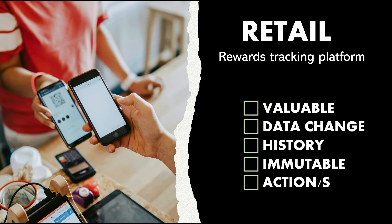Let's run this hypothetical app through our checklist. Are we measuring something valuable? Absolutely — the points. Is there a pattern where data keeps changing? Yes — every time the consumer earns points or cashes them out, that is the data change. Is it interesting to look at the history? Absolutely — when there is a dispute or a reason to do analytics, the history becomes very important. Is the data immutable? Yes — we want to keep it immutable because we do not want anybody to go back and change the points by reducing or artificially increasing them. And are there actions that can be taken automatically upon certain triggers? Yes — we can have instances where the points expire, so certain actions can be taken upon certain rules.